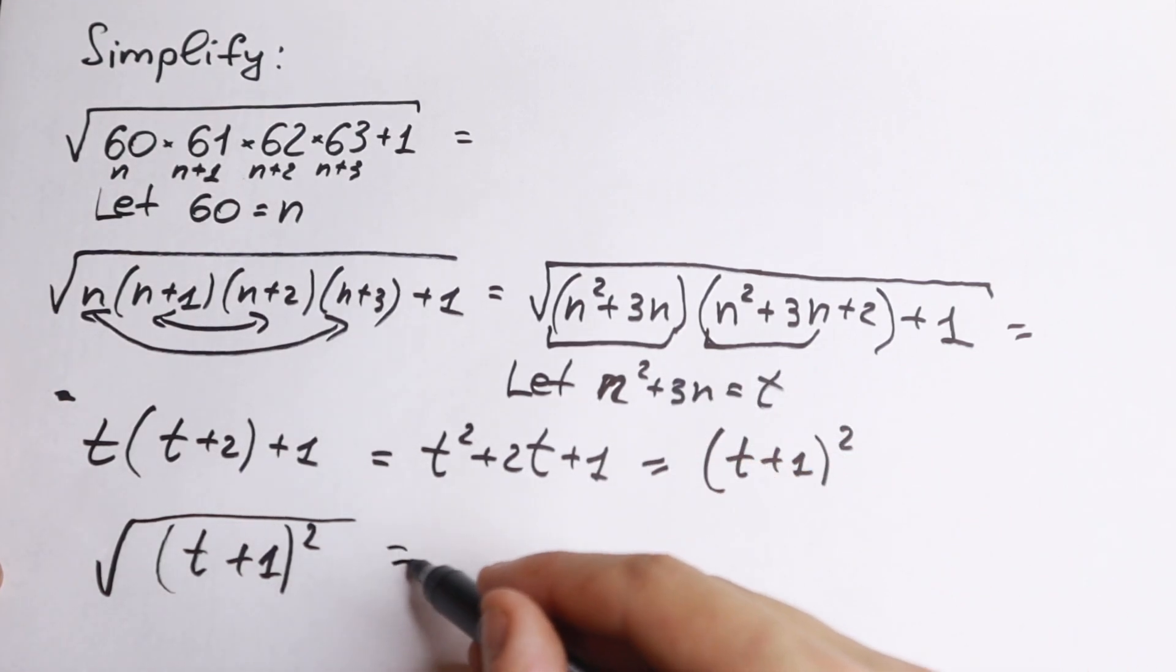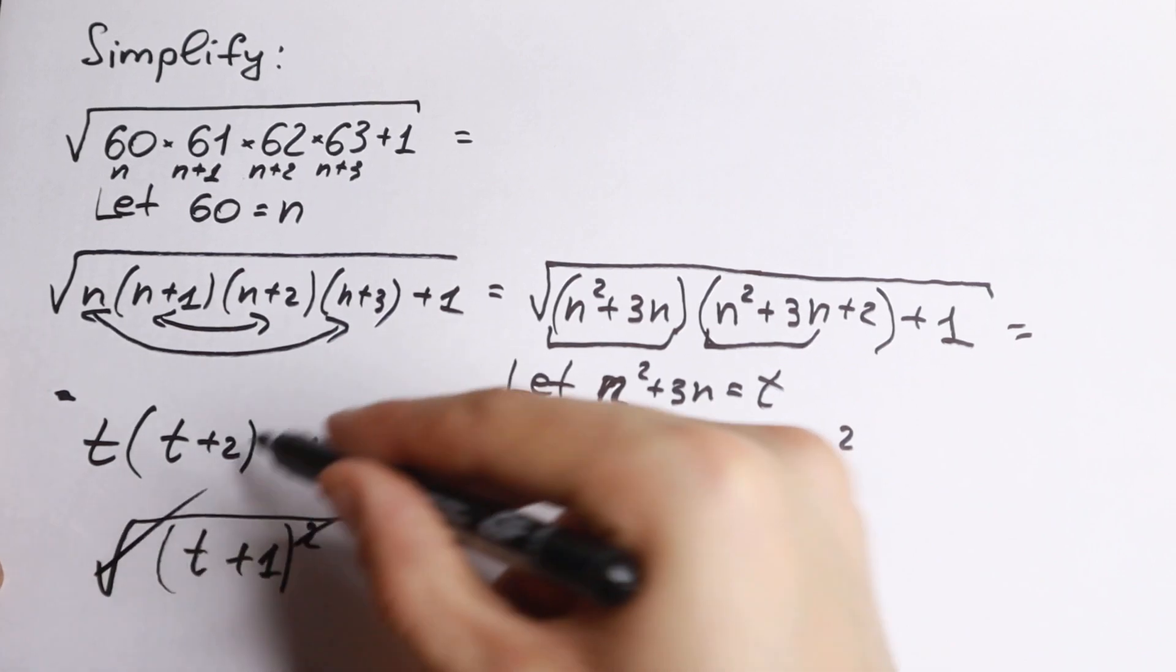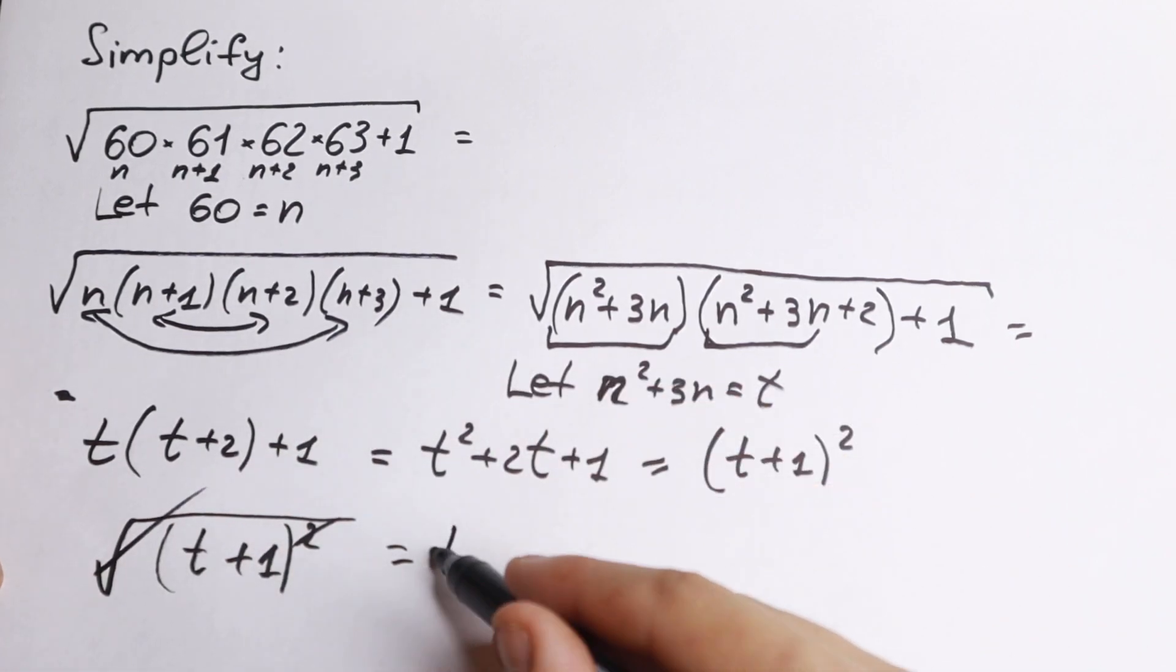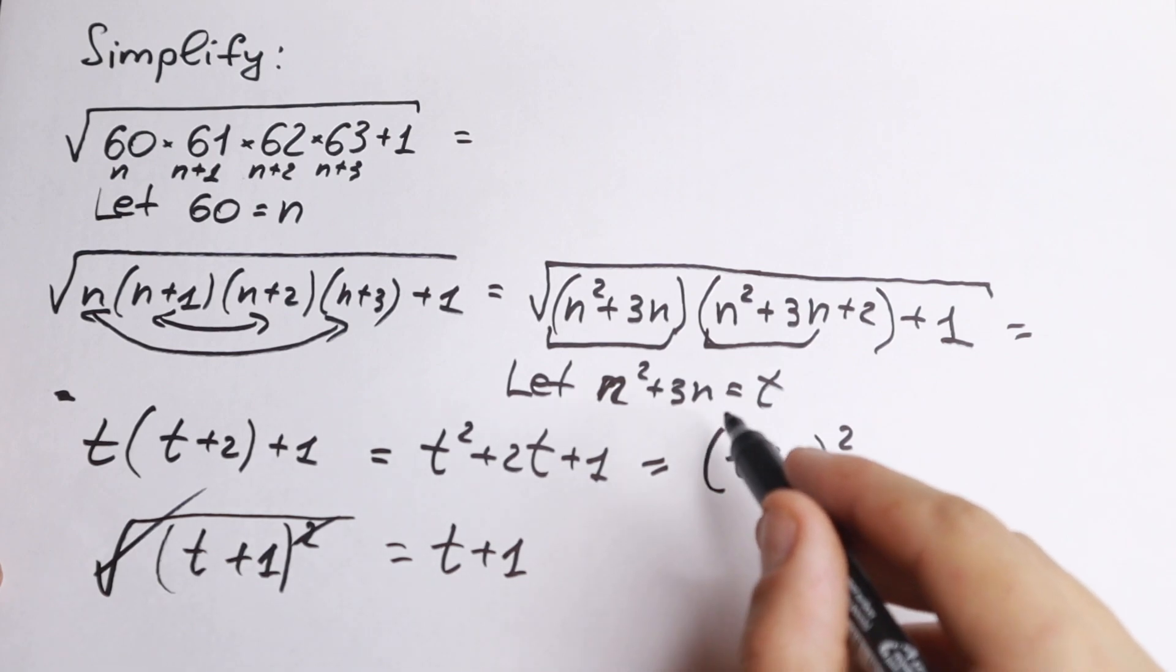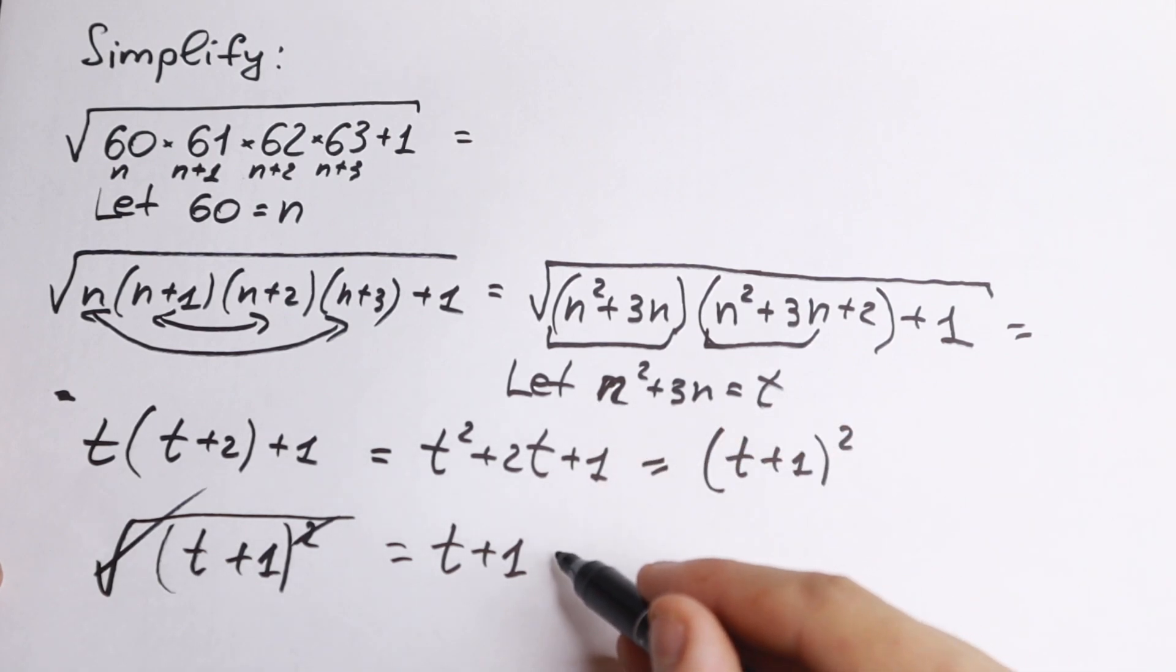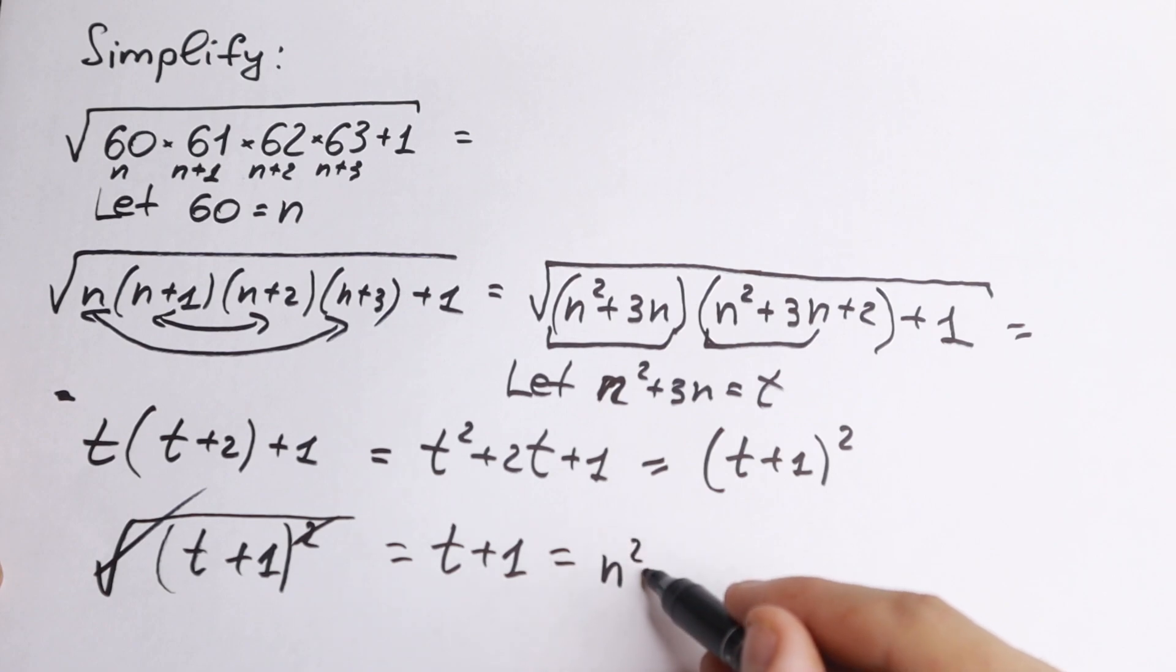And right now, right here square, we can cancel with this square root sign. So this is equal to t plus 1. So all these square root equal to t plus 1, but moreover, t equal to n square plus 3n. So we'll have n square plus 3n and with this plus 1.